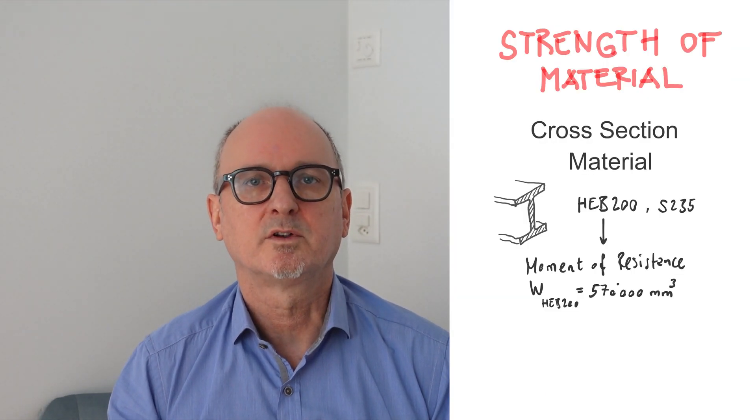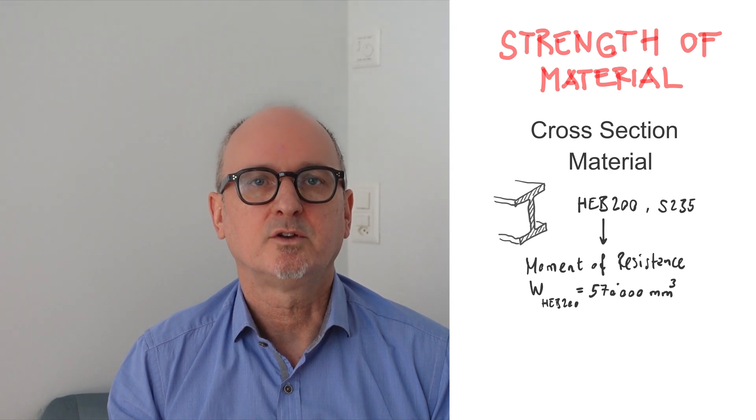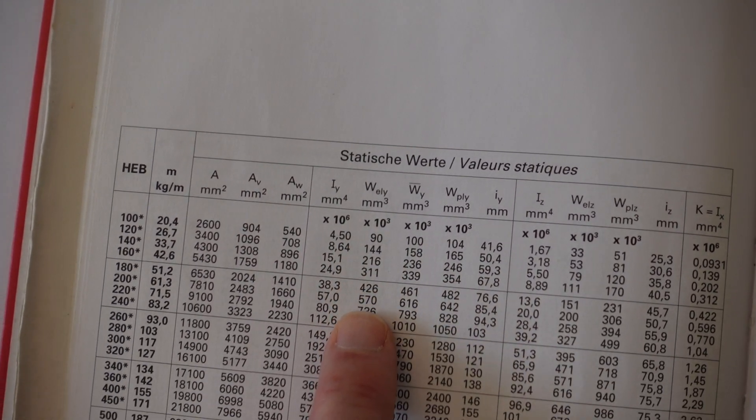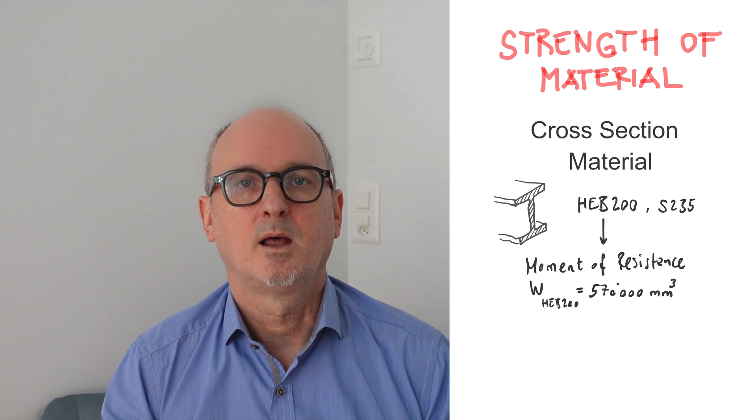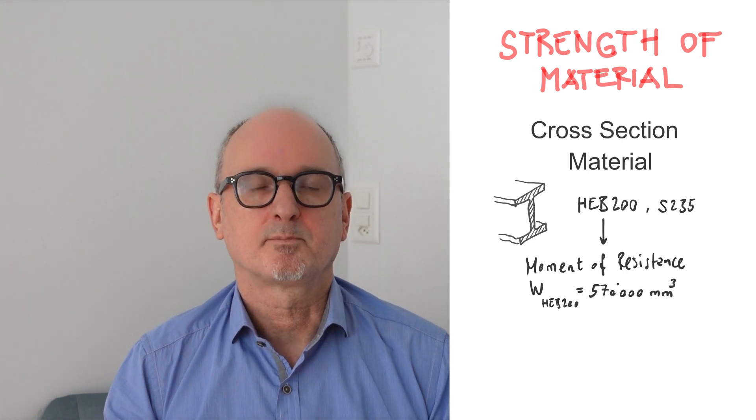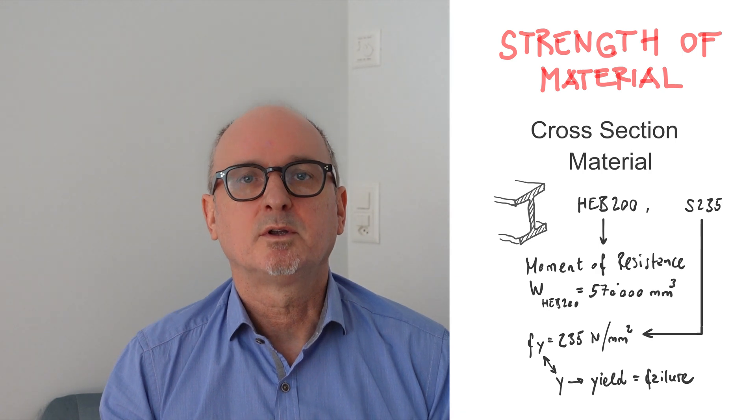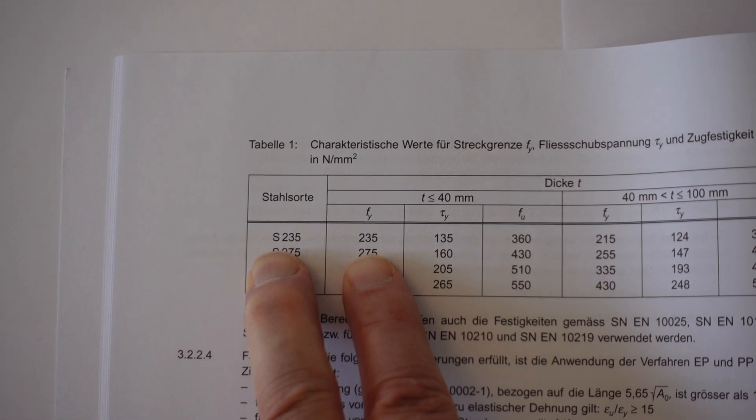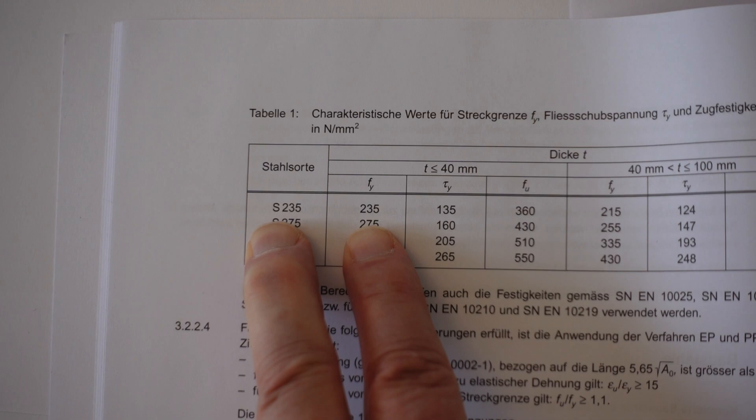Now we go for the resistance. With girder cross-section and material properties we can calculate the bending resistance. We can select the moment of resistance W for our girder HEB200 from any steel table. For this profile it's 570,000 cubic millimeters. This value only corresponds to the cross-section and is therefore only a geometric property. Additionally we have the material property which here is the yield tension of the steel. The name S235 marks the yield tension Fy, which as you remember is the top or failure level of the four levels.